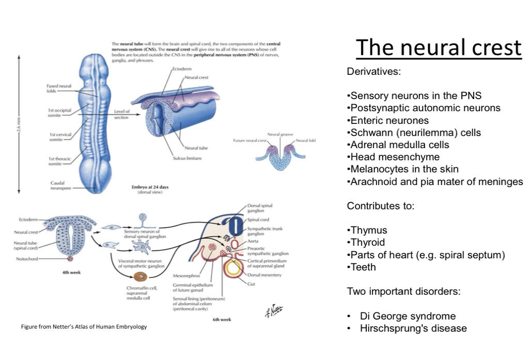With such a complex pattern of migration, it is no surprise that there are described disorders of neural crest cell development. These are very many in number and very complex in their clinical features. However, two important disorders that you should be aware of are DiGeorge syndrome and Hirschsprung's disease.